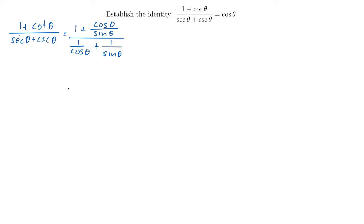Now it looks like we've made this a lot more complicated, but really we haven't, because now with everything in terms of sines and cosines, we can actually do the addition of the two fractions in the numerator and the denominator of the big fraction. So first we need to find a common denominator on top. Let's write 1 as sine theta over sine theta, so we get sine theta over sine theta plus cosine theta over sine theta.